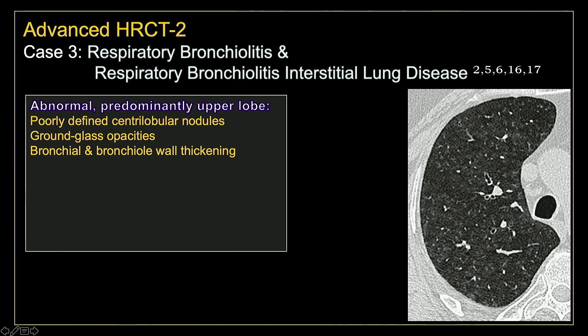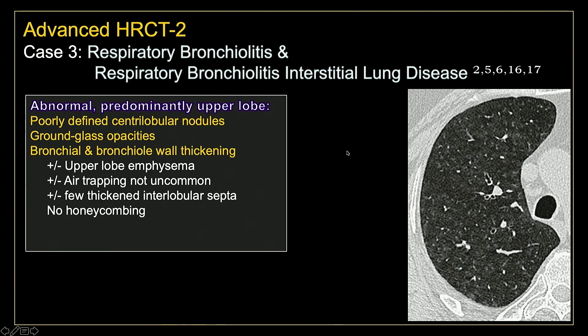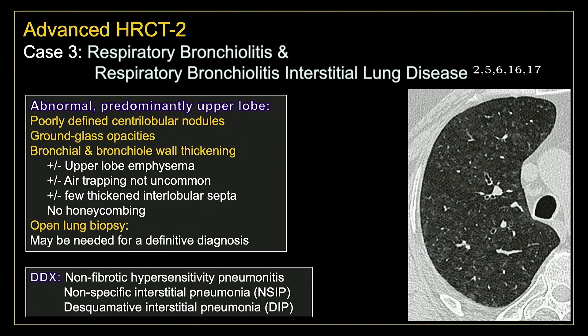On imaging, it looks a lot like Dr. Rossi's cases of ill-defined, poorly-defined nodules with non-fibrotic HP. You'll also see concomitant bronchial wall thickening. Importantly, smokers tend to be protected from developing HP, so that's one way we can differentiate HP from respiratory bronchiolitis. Respiratory bronchiolitis also tends to be more heavily concentrated in the upper lung zones. Don't be surprised if you see concomitant emphysema. On expiratory imaging, you'll see air trapping and thickened interlobular septa, but no honeycombing. Open lung biopsy may be necessary to help differentiate this from non-fibrotic HP, nonspecific interstitial pneumonia, and DIP.